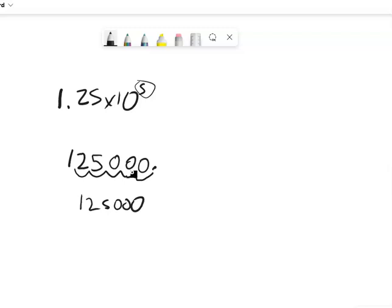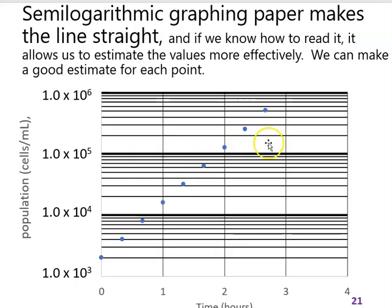1, 2, 5, 0, 0, 0. I can put a comma here, and I know that is 125,000. So that's how you do that.